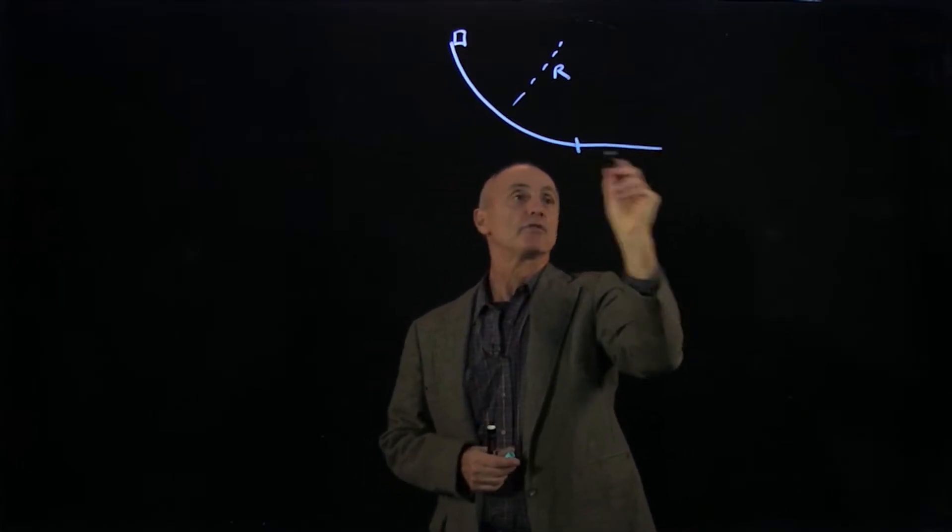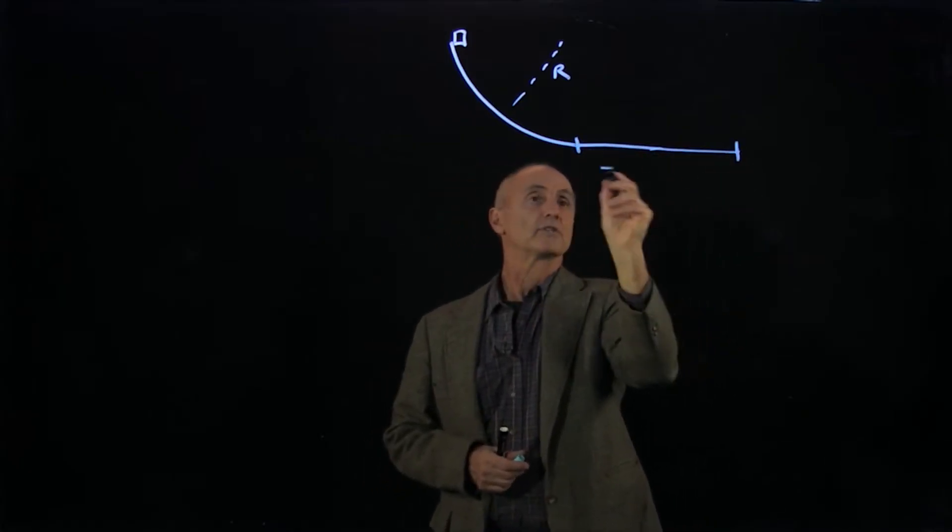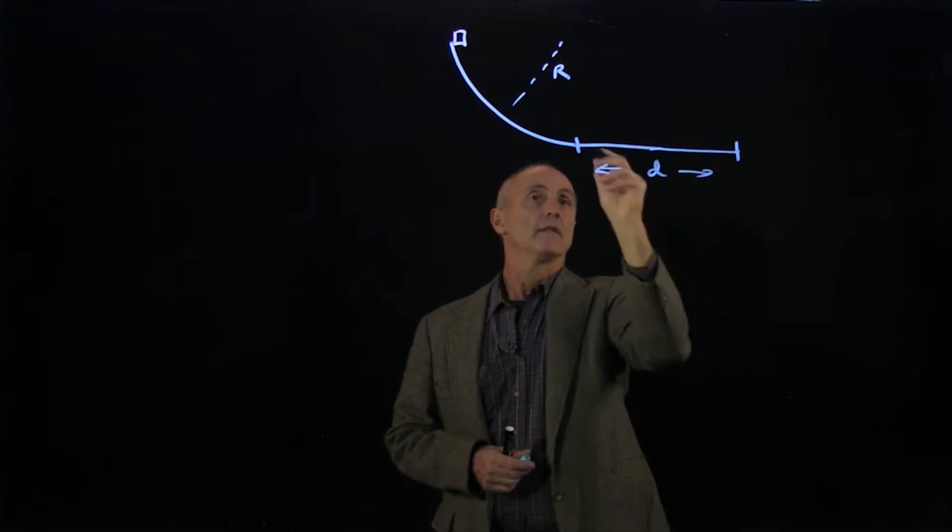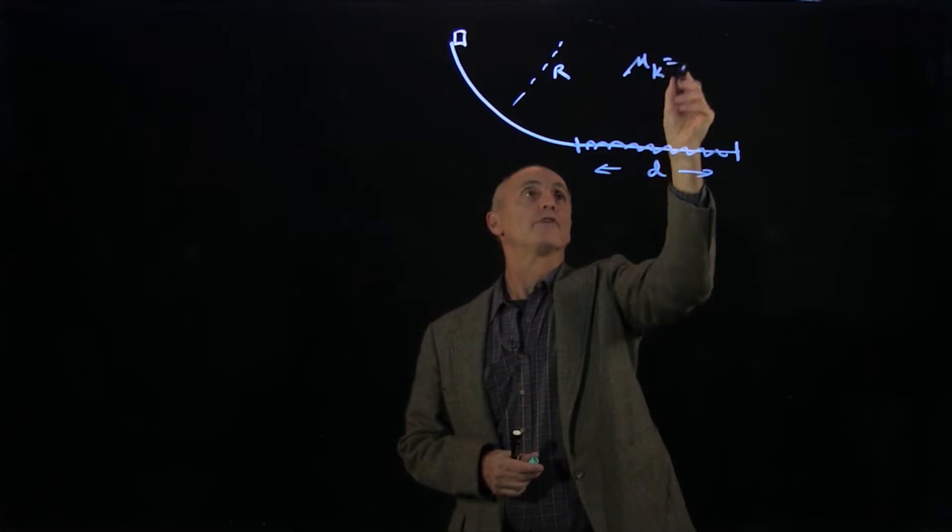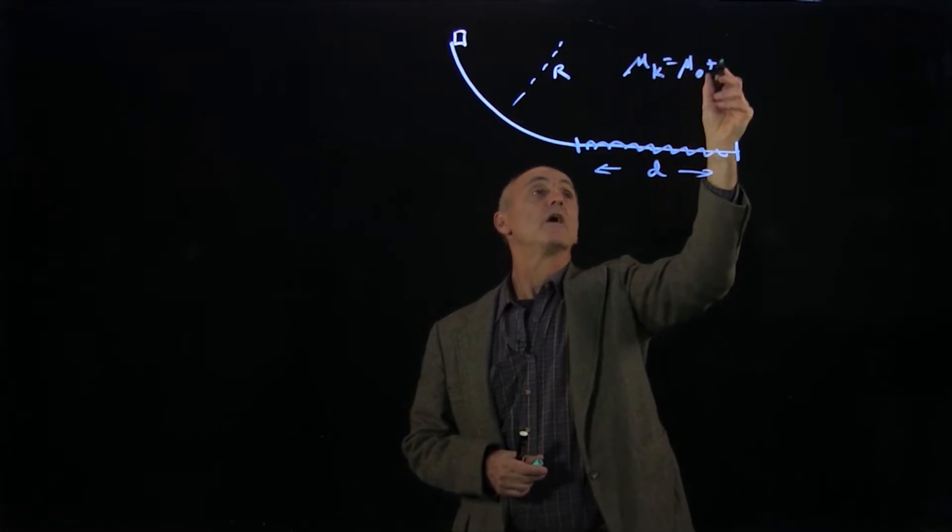And now here's a surface, a certain distance d, that has friction where the coefficient of friction is non-uniform.